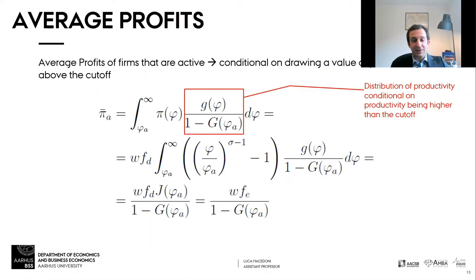We substitute the value of the profits, so we have wage times f_d times this function of phi and phi_a — the integral which is none other than our j function. Substituting the expected profit condition, we obtain that the average profits of surviving firms equals the fixed cost of entry divided by the probability of being active.